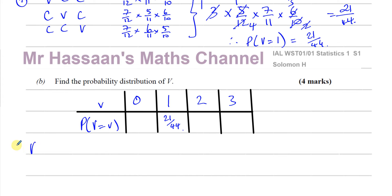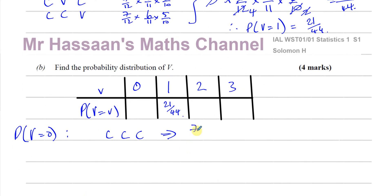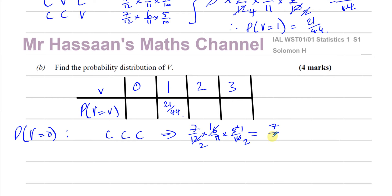For P(V=0), all three cards must be consonants: consonant-consonant-consonant. That gives 7/12 × 6/11 × 5/10. Cancelling: 6 and 12 give 2 and 1; 5 and 10 give 1 and 2; the twos cancel. We're left with 7 over 4 × 11 = 44. So P(V=0) = 7/44.